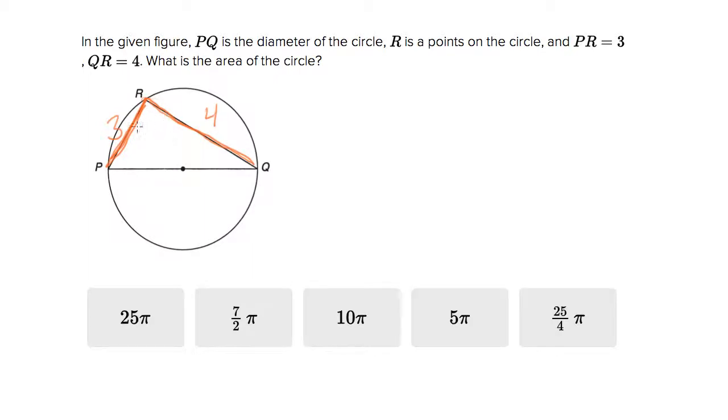What is the area of the circle? You need to have something memorized here - this is the most esoteric rule in all of geometry, but the ACT loves it. If you have a triangle inscribed in a circle where one of the sides is the diameter of that circle, then that triangle is a right triangle.